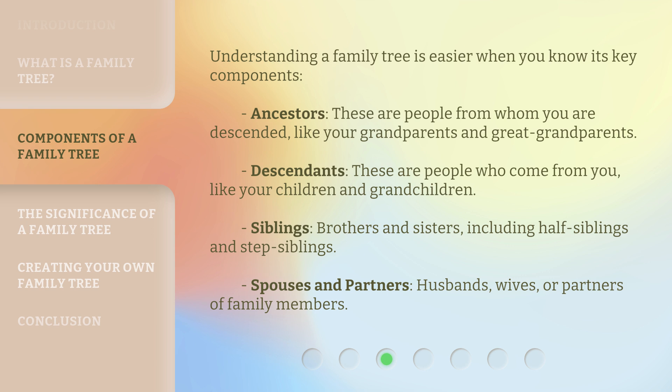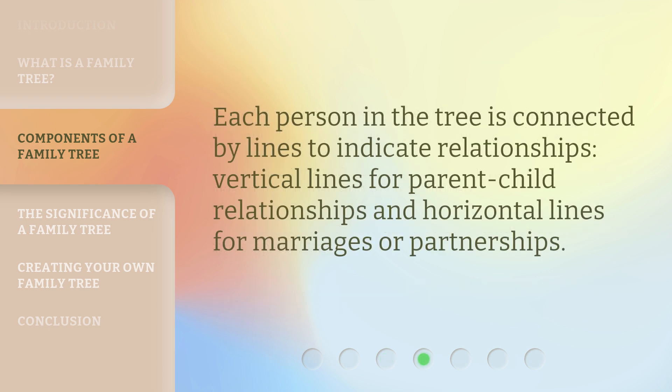Spouses and partners: husbands, wives, or partners of family members. Each person in the tree is connected by lines to indicate relationships — vertical lines for parent-child relationships and horizontal lines for marriages or partnerships.